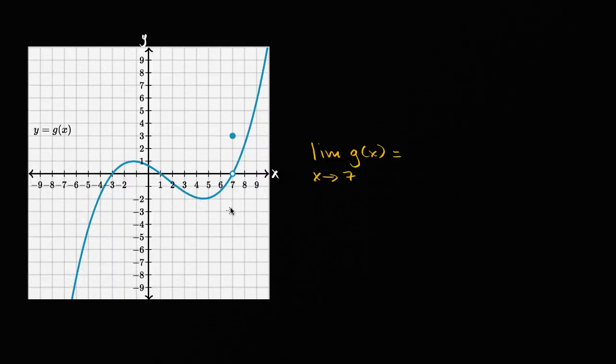Here we have the graph y equals g of x. We have a little point discontinuity right over here at x equals seven. And what we want to do is figure out what is the limit of g of x as x approaches seven.